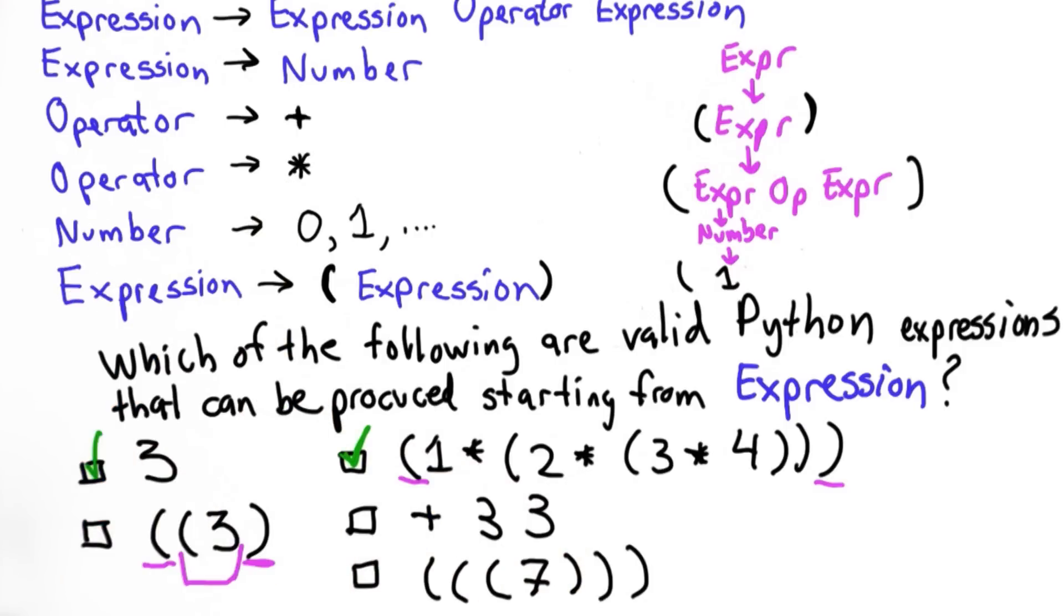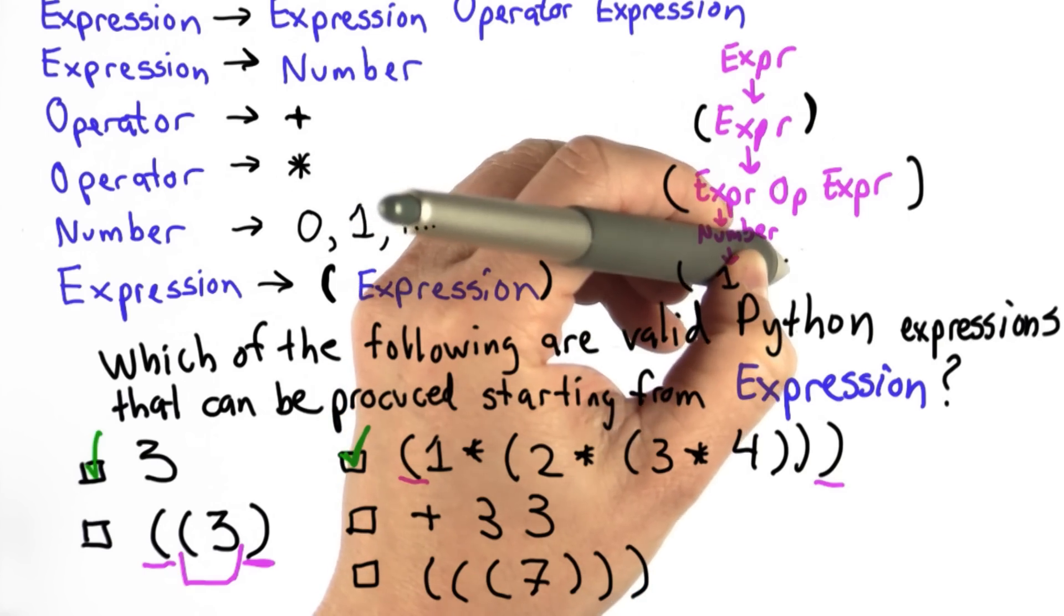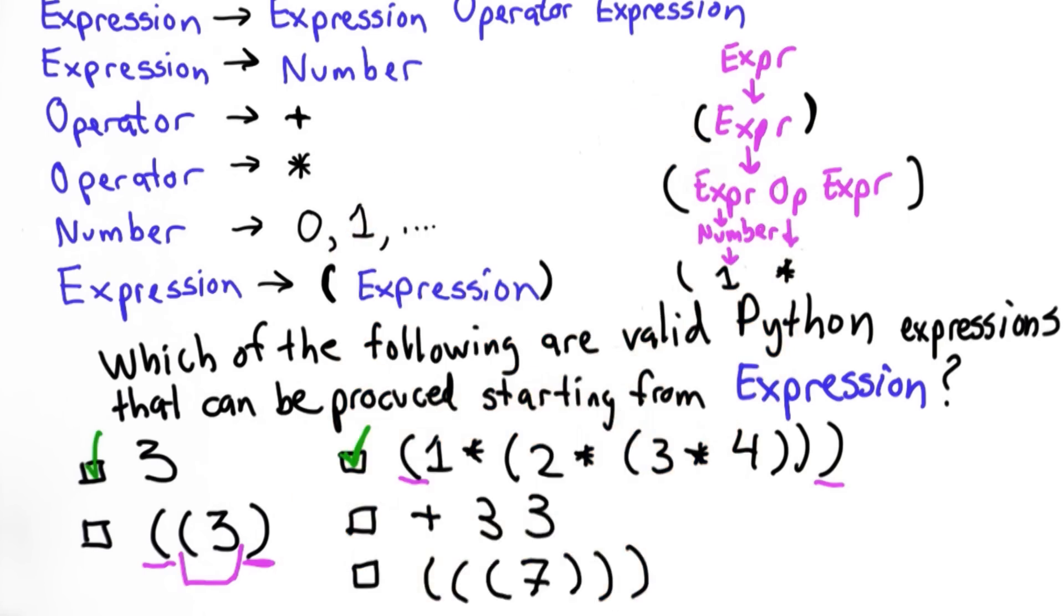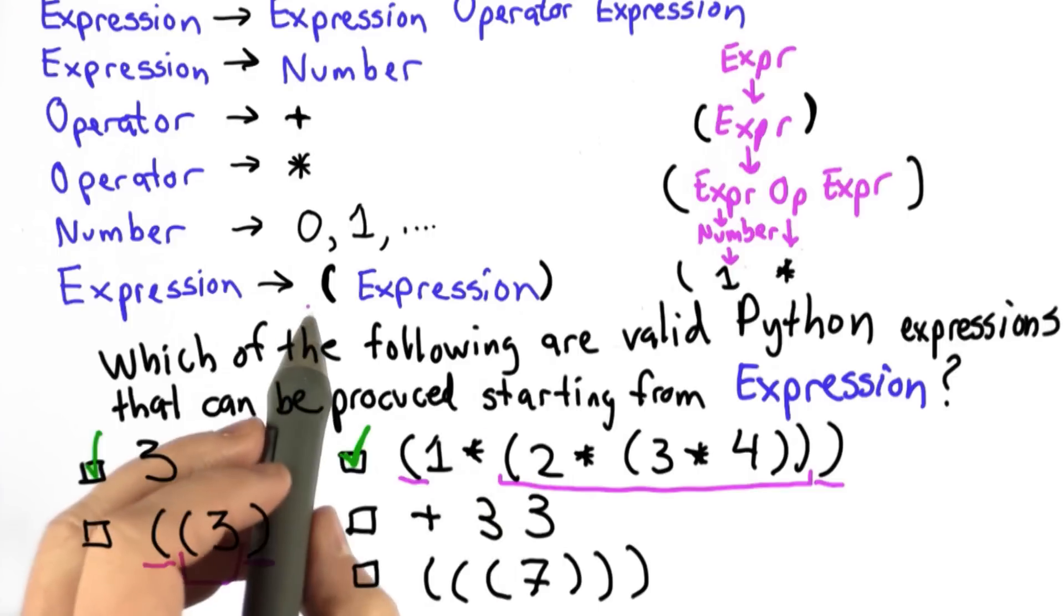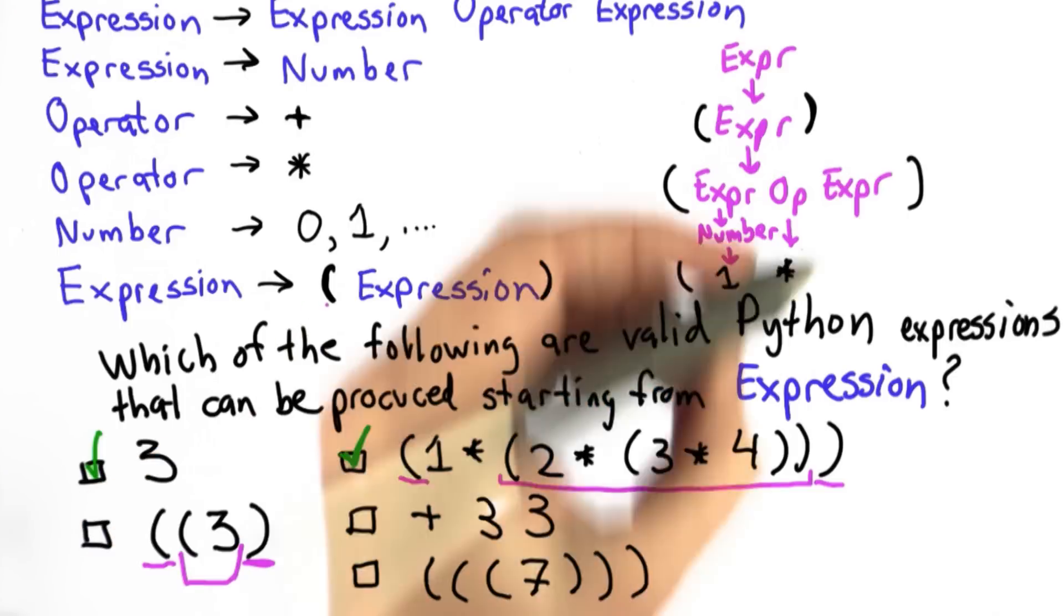We're going to replace the operator following the operator goes to times rule. That's going to be replaced with times. And now we've got to replace this expression. We're trying to produce this whole thing. So we're going to replace this with using the parentheses rule. And we can keep going.